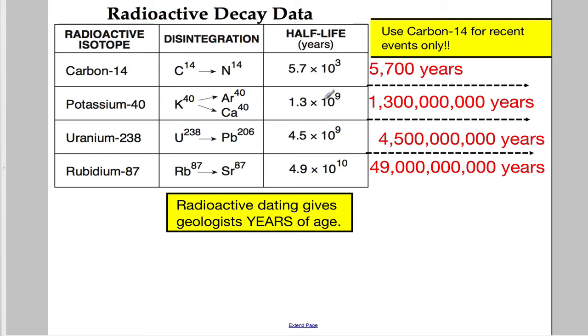There is a limit to that as well. Carbon-14 is good, but it's only good for about 50,000 years — about 10 or so half-lives — before there's not enough carbon left to be useful in the dating process.